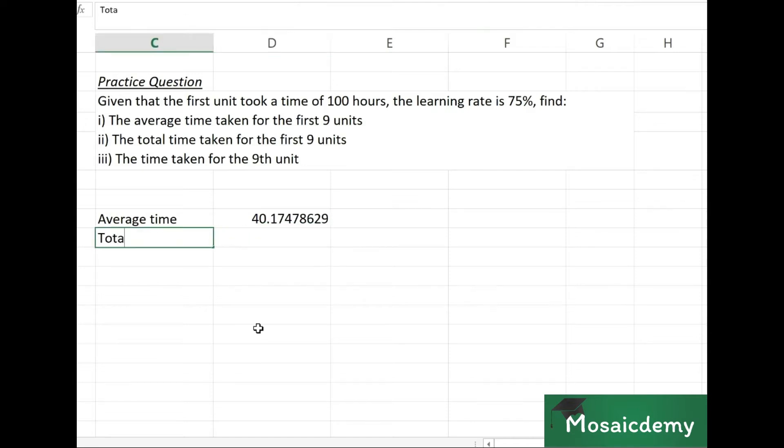After that we have the total time for the first 9 units. We simply multiply the average time by 9.